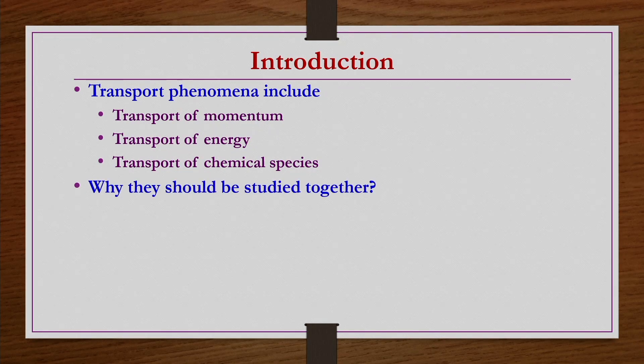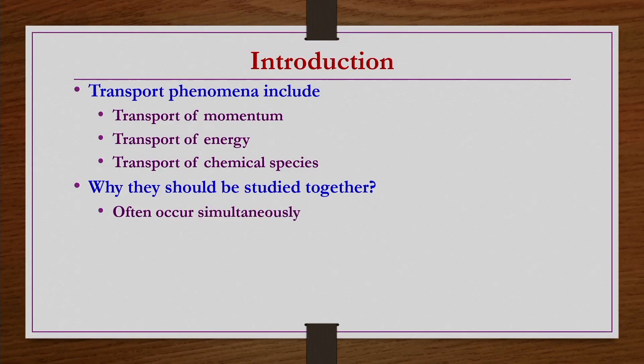Then why should we study them together? As a separate course, fluid mechanics, heat transfer, and mass transfer we might have already studied at the undergraduate level. We need to study them together because in general these processes — transfer of fluid, energy, and species — occur simultaneously in industries. Having an individual transport process is a kind of exception, not a rule.